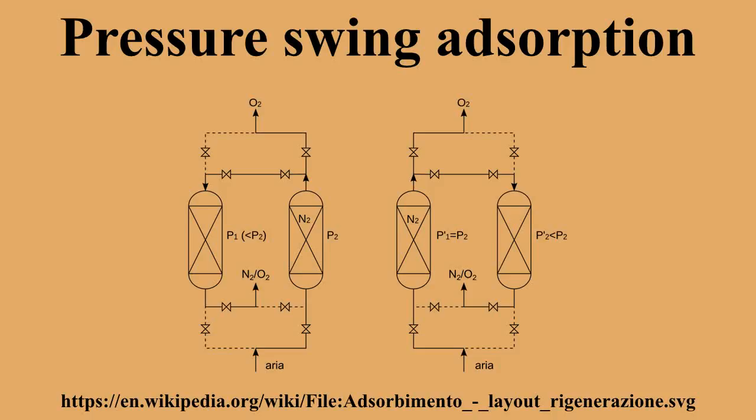The double stage PSA is also applied to oxygen concentration. In this case, a zeolite aluminum silica-based adsorbent is used to absorb nitrogen in the first stage, concentrating oxygen to 95%. In the second stage, a carbon molecular sieve adsorbs the residual nitrogen in a reverse cycle, concentrating to 99% oxygen.